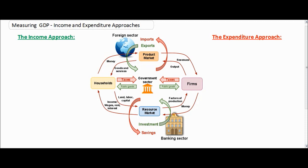Let's begin by defining gross domestic product more clearly. One way to measure GDP is by using the income approach. The income approach measures the total income earned by the households in a nation during a year. Let's look at our graph here and decide where the income in the circular flow is shown.